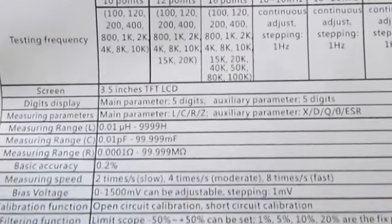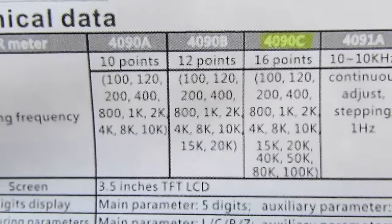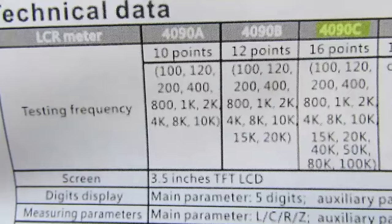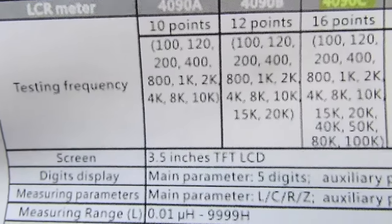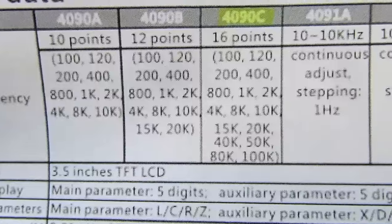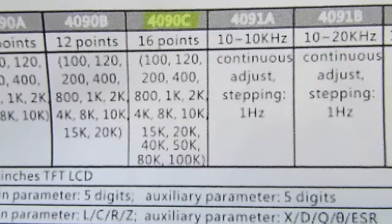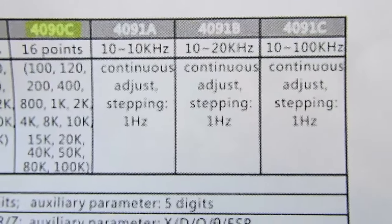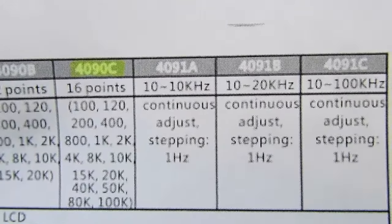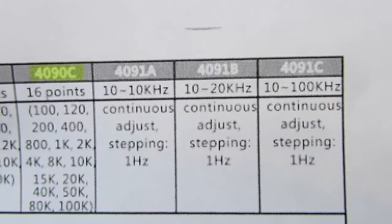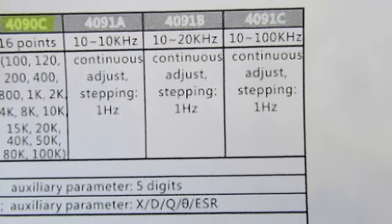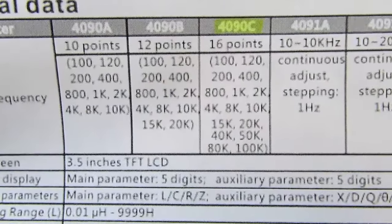The real distinguishing feature between them is how many frequencies you can test at. The cheapest model, the 4090A, has ten different frequencies between 100Hz and 10kHz. The 90B is 100 up through 20kHz, and the 90C is 100 up through 100kHz. The 91A, 91B, 91C have the same frequency range limitations, but instead of stepping through presets, they just have you enter the frequency you want.